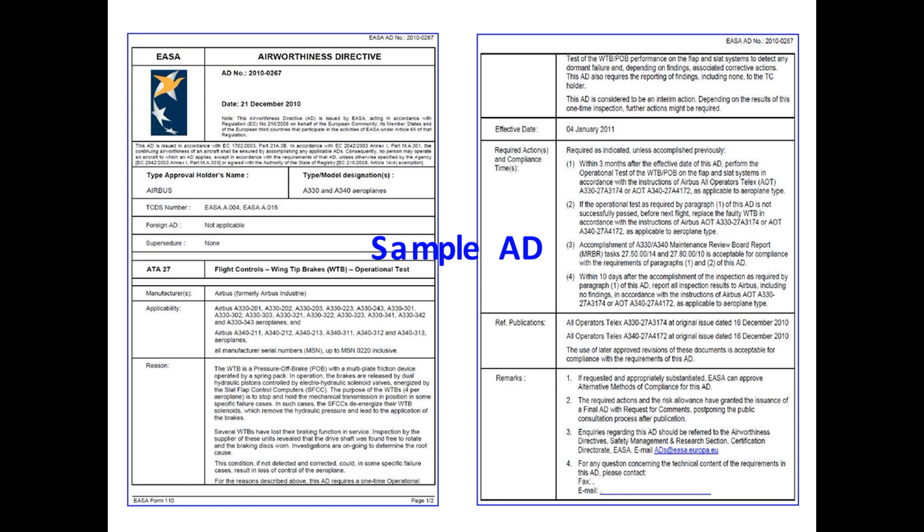Airworthiness directives will typically include the following: a description of the unsafe condition and reason for the AD; the product — aircraft, engine, or propeller — to which the AD applies and its applicability; the effective date of the AD; the required action and the compliance time; and reference to relevant publications regarding the subject, for example, the manufacturer's service bulletin.